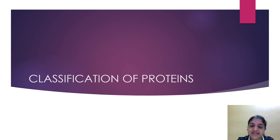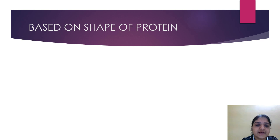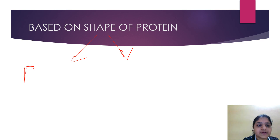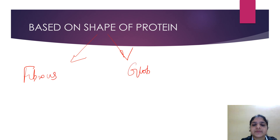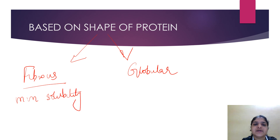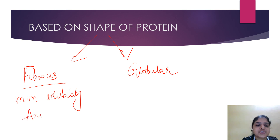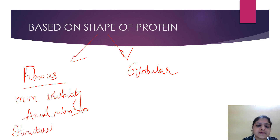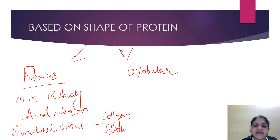Now, we will see the classification of proteins. Based on the shape of the protein, they can be divided into fibrous proteins or globular proteins. Fibrous proteins are elongated or needle-shaped — they are rod-like, have minimum solubility in water, have a regular secondary structure, and their axial ratio is more than 10. They mainly consist of structural proteins like collagen, elastin, and keratin.